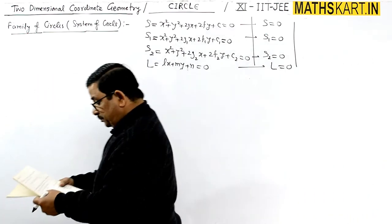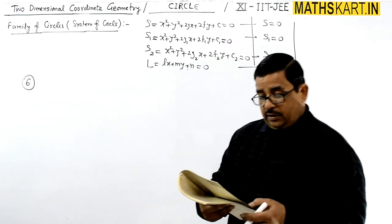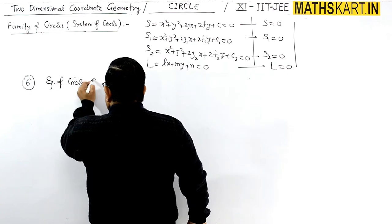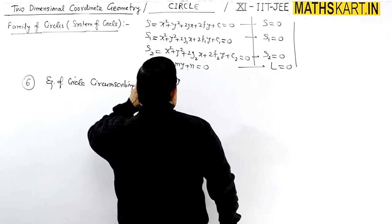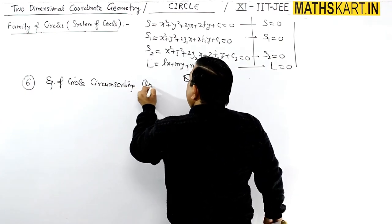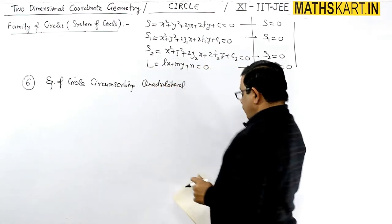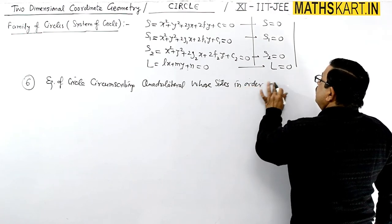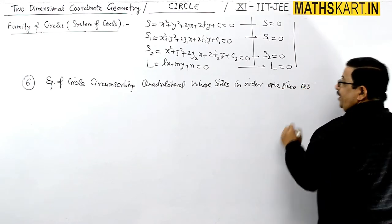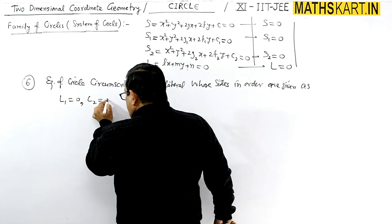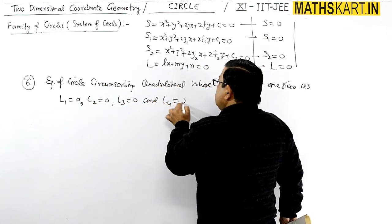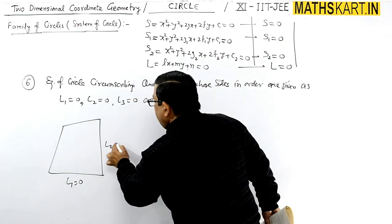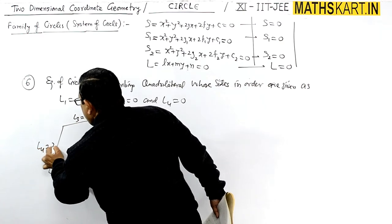The next concept is the equation of the circle circumscribing a quadrilateral whose sides in order are given as l1 = 0, l2 = 0, l3 = 0, and l4 = 0. Note that the four lines must be taken in order.